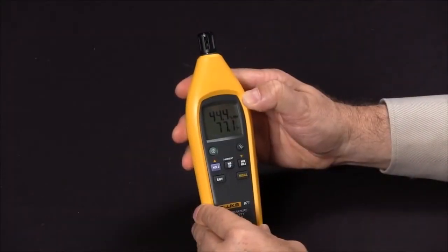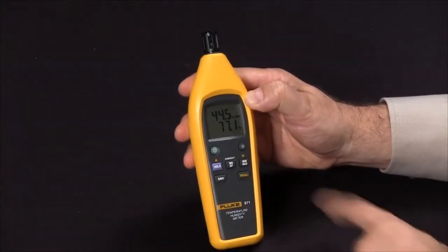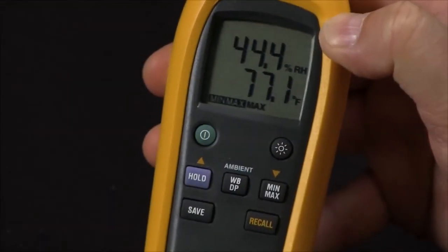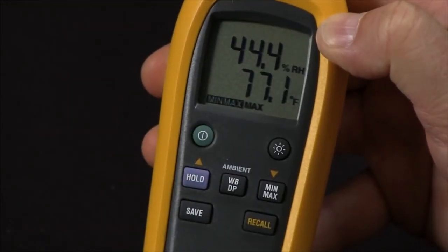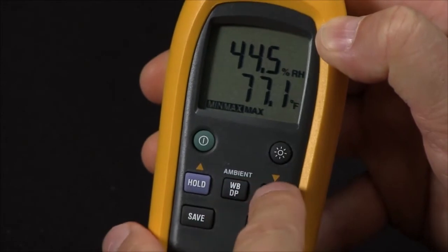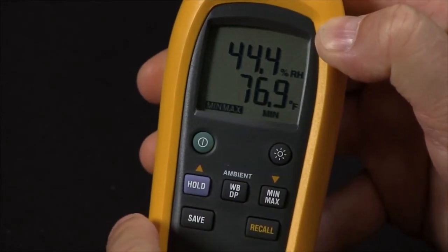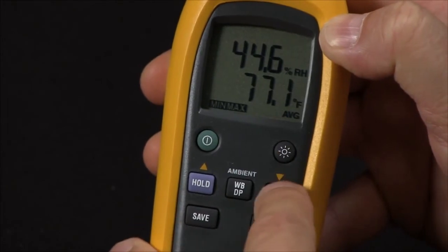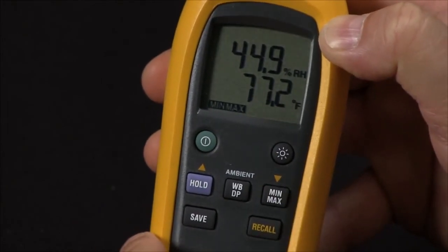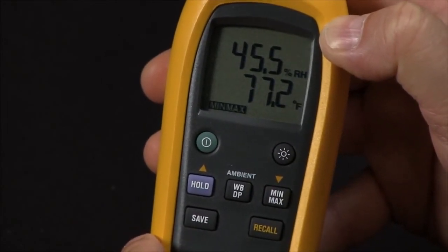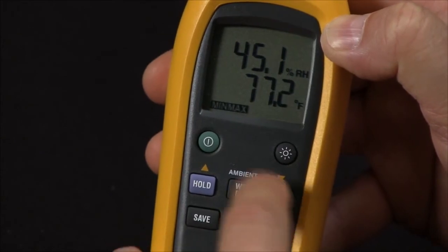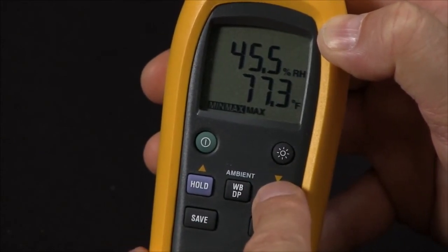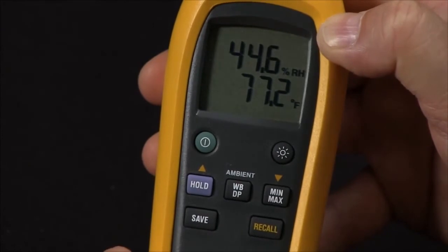We do have a min-max feature on the 971 as well. Simply press this button. You will have your min-max reading on the screen. To sequence through, press the button once to get your minimum reading, press it once again to get your average, and once again to get your maximum reading. To exit this mode and go back to a live measurement, simply hold the min-max button down, and you are now back to a live measurement.